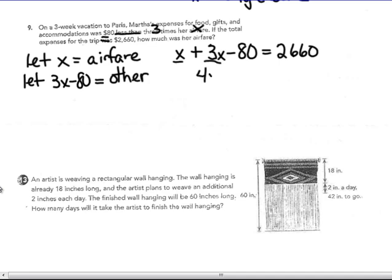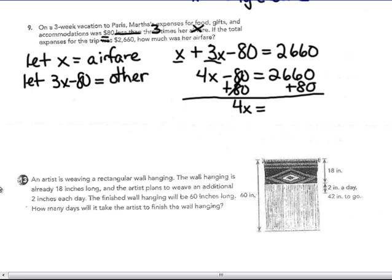So I'm going to put my like terms together. I get 4X minus 80 equals $2,660. I'm going to add 80 to both sides. And again, feel free to pause me, stop me, slow me down if you need to. Replay. $2,740 when you add those together. Dividing by 4, dividing by 4, X equals, and yes, use your calculator, $685. So Martha's airfare was $685. So putting that back in, $685 plus 3 times $685 minus 80. I did check. I used the calculator, $685 plus 3 times $685 minus 80. So I'm putting it back into this equation. And I did get on the calculator $2,660. So the airfare was $685.